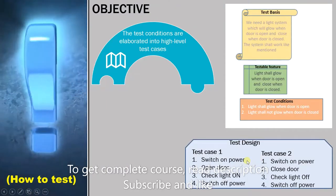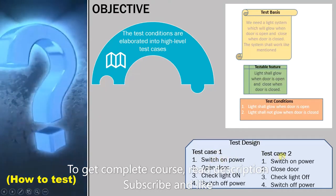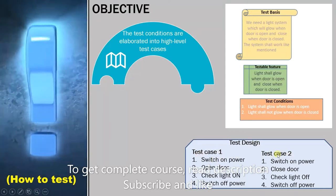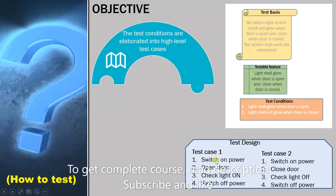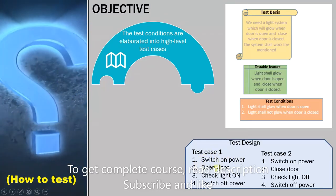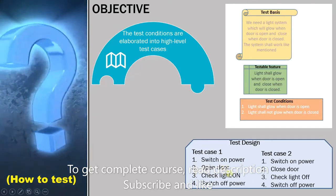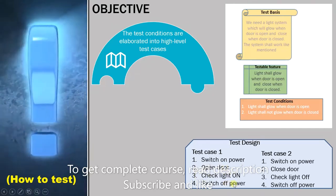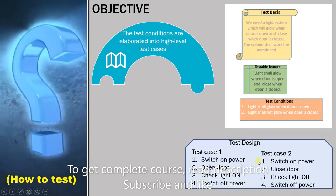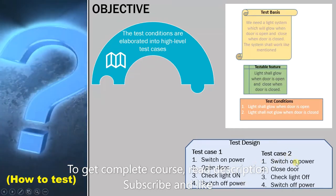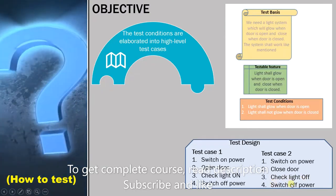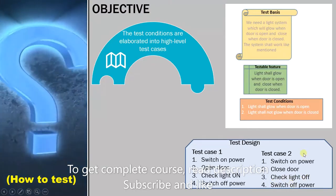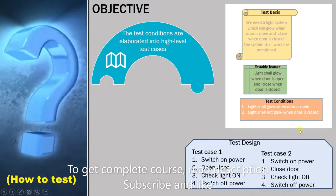In the design you can write two test cases to show how you intend to test these test conditions. The first test case says you have to switch on power then open the door then check if light is on then switch off power. Similarly in test case 2 you have to switch on the power, close the door, check if light is off then switch off power. These two tell us how we have to test the test conditions.